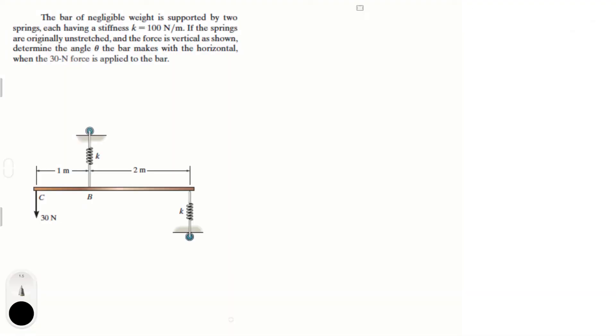Alright, let's do this problem that says the bar of negligible weight is supported by two springs, each having a stiffness k of 100 N per meter. If the springs are originally unstretched and then the force is vertical as shown, determine the angle theta that the bar makes with the horizontal when the force applied at point C is 30 N.